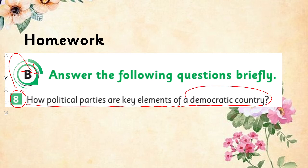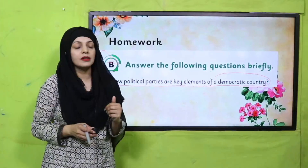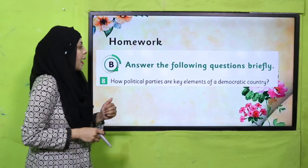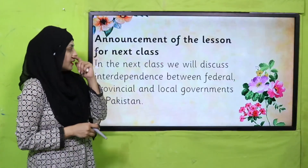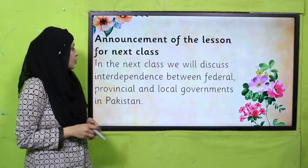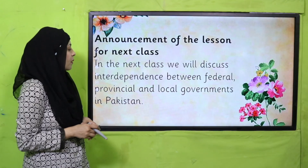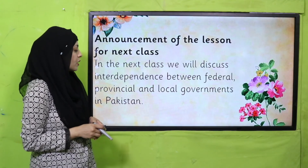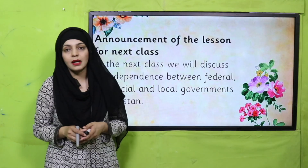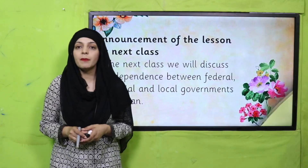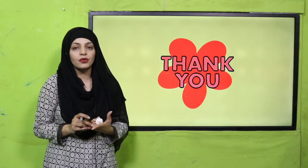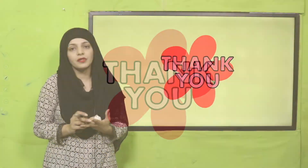You will also do question number eight from exercise B: 'How are political parties key elements of a democratic country?' — Jo political parties hain, wo ek democratic country ka kaise hissa hain — write it down. In the next class, we will discuss interdependence between federal, provincial, and local governments in Pakistan. Until then, keep everybody around you safe. Have a good day. Thank you so much.